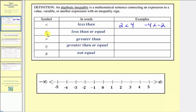Notice how the inequality symbol points toward the smaller value and opens toward the larger value. The next symbol looks almost like the less than symbol but has half an equal sign below it. This is the less than or equal symbol. Because two is less than four, we can also say two is less than or equal to four. And because of the equal part, negative four is less than or equal to negative four — negative four isn't less than negative four, but it is equal to negative four, so the inequality is still true.